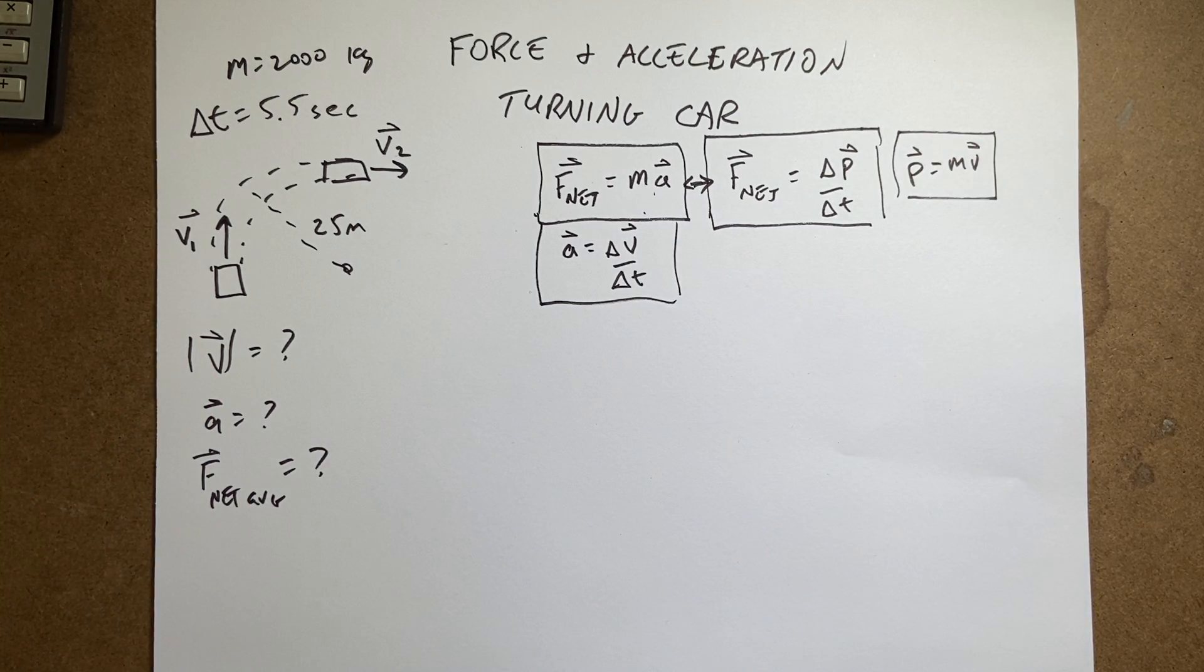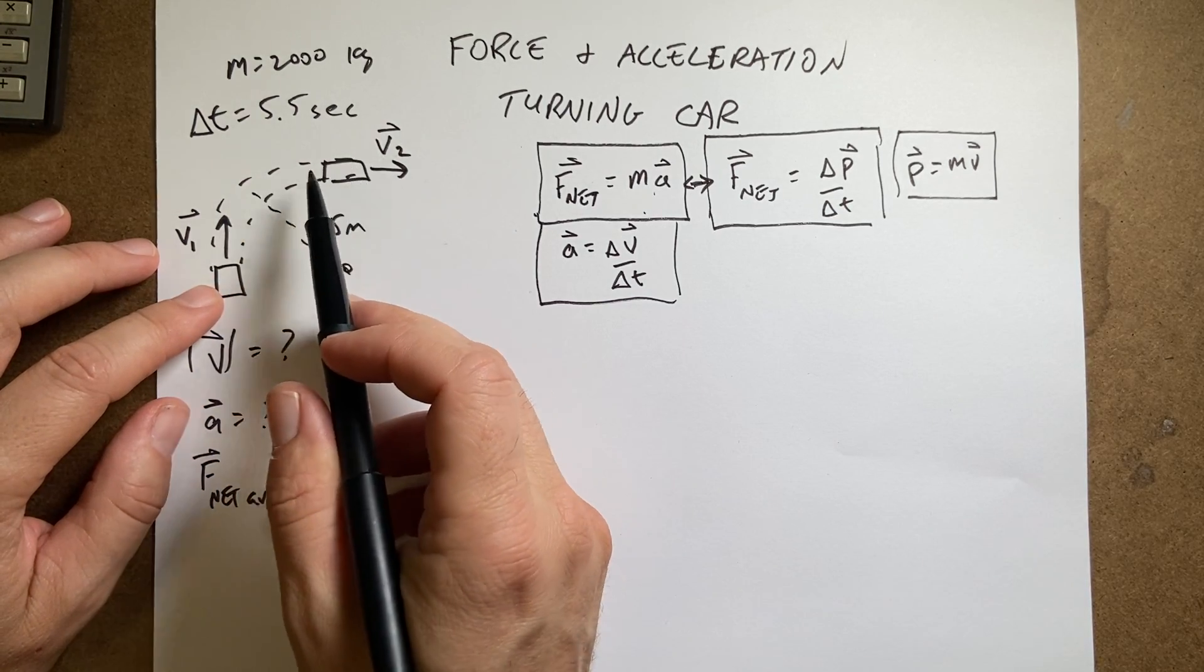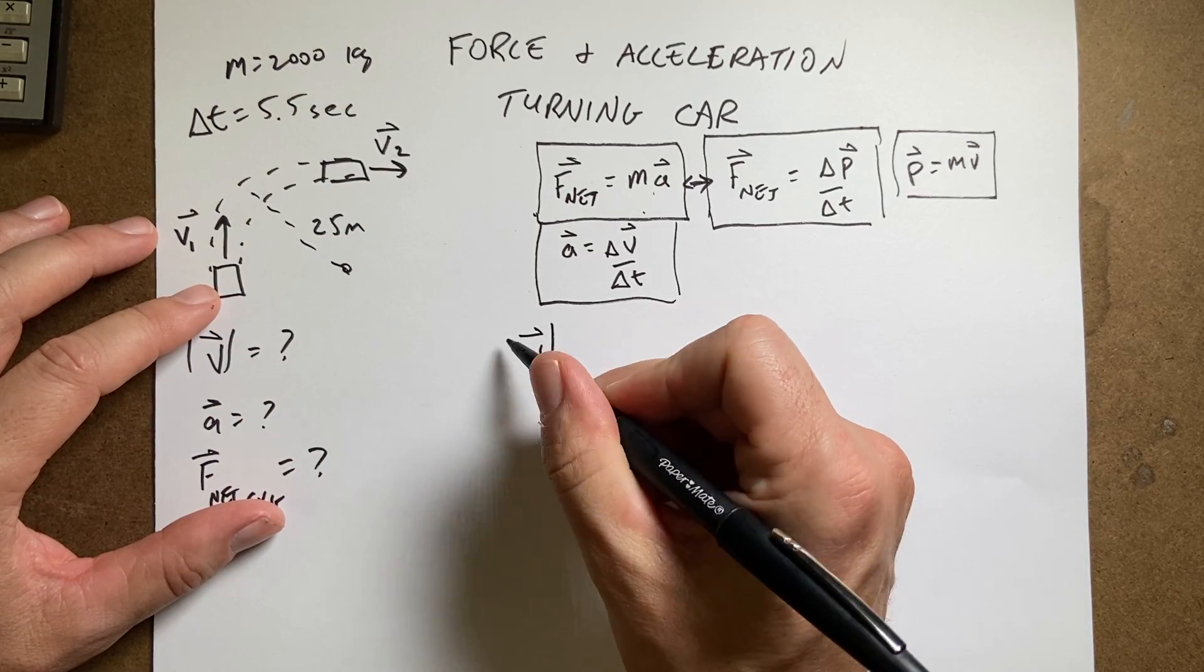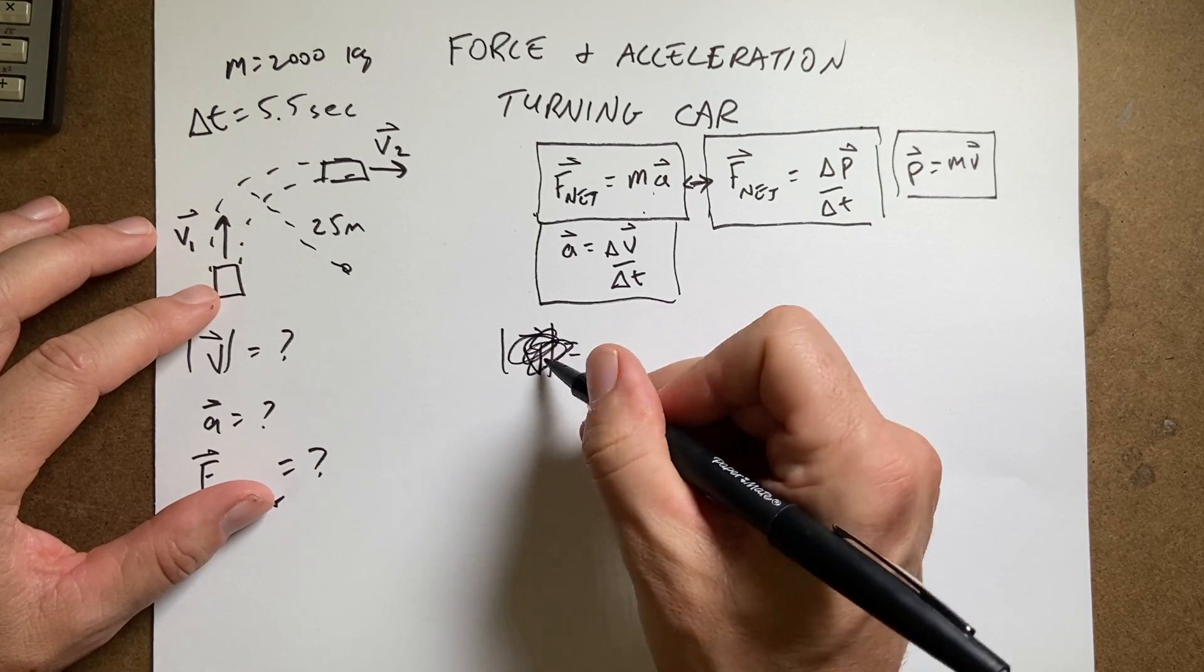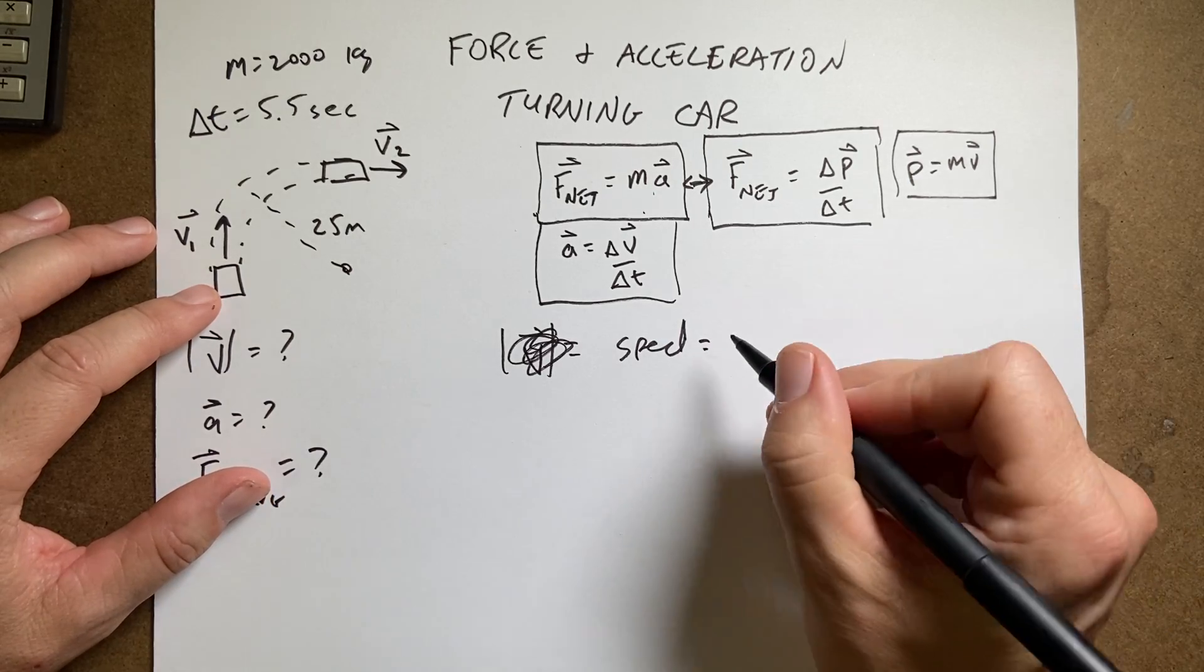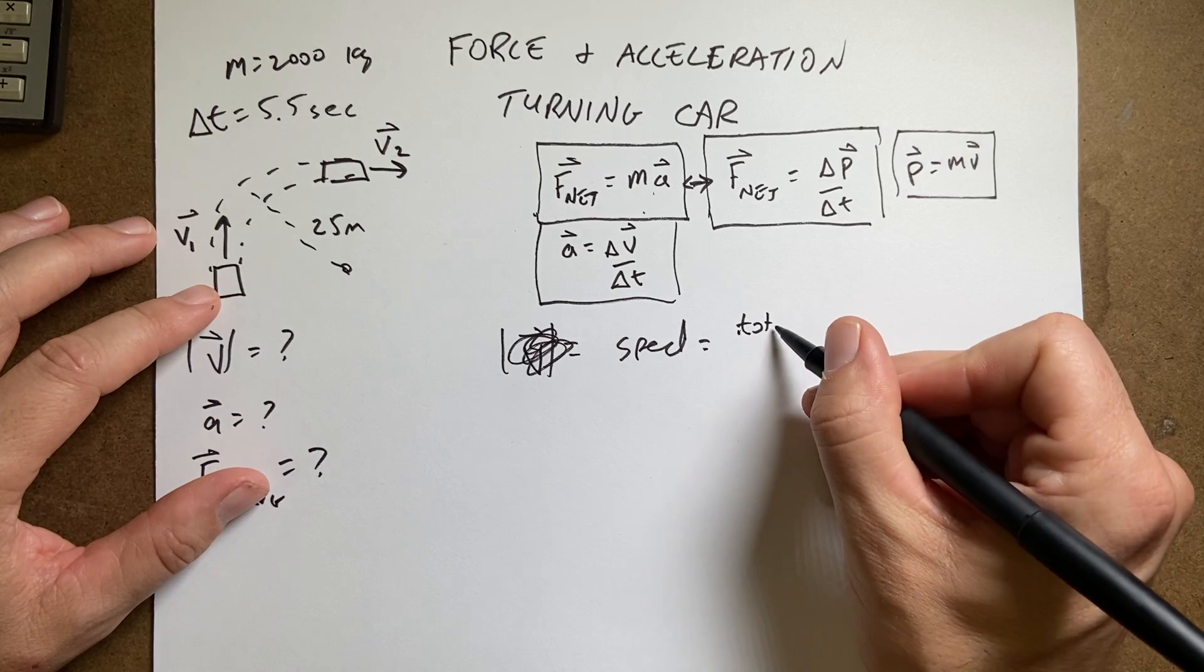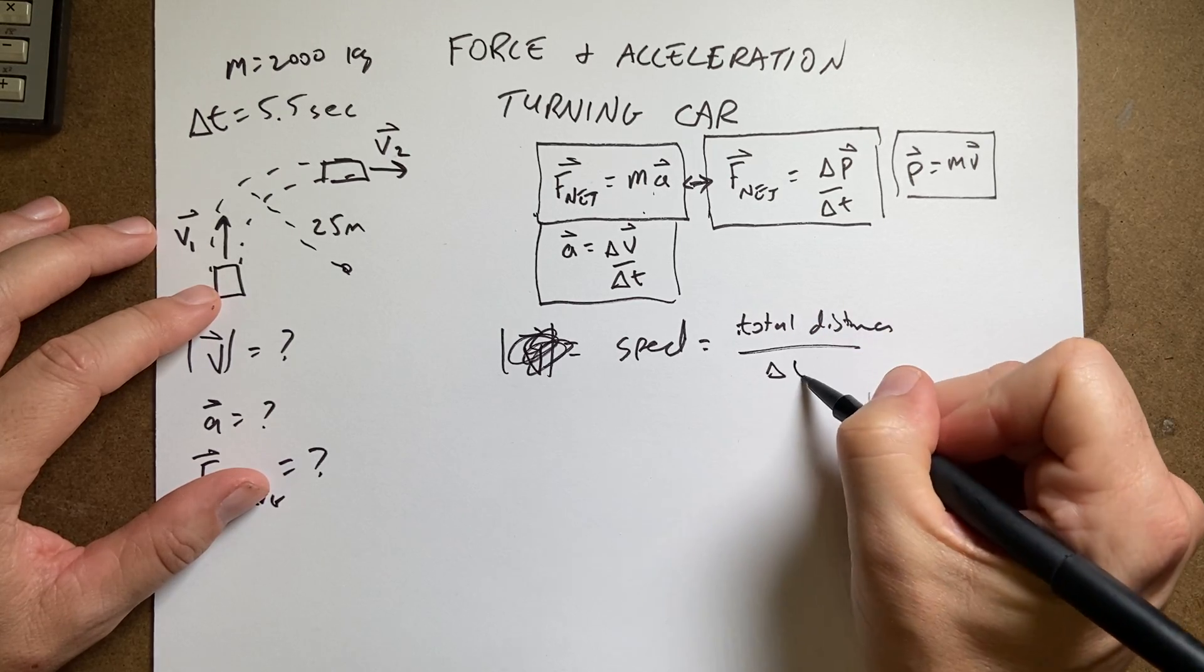Okay, so let's first find the magnitude of the velocity. So if this car is going at a constant speed, how fast is it going? Well, I can use this, the average velocity, actually let's just call this the speed, because it's not actually the average velocity.